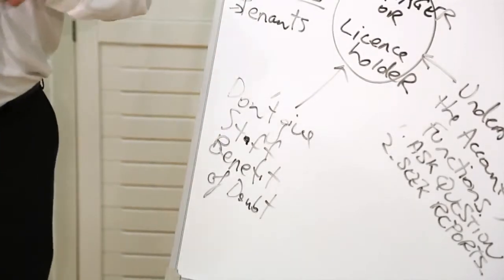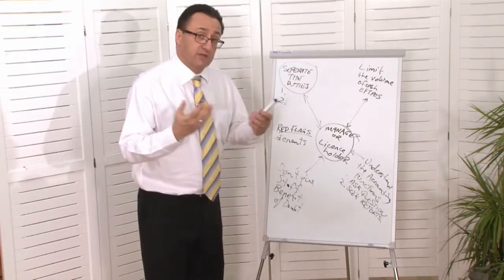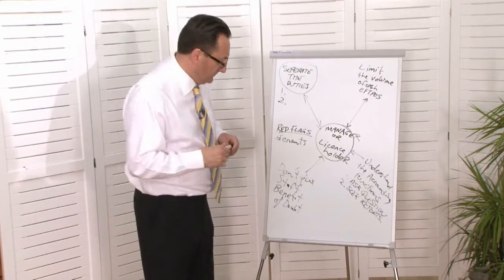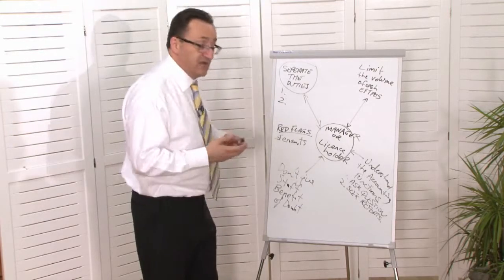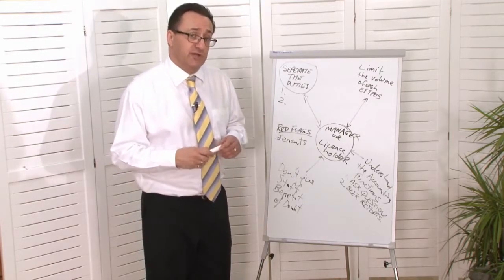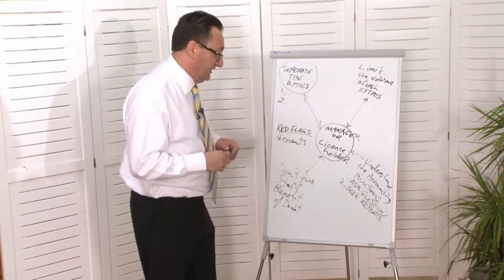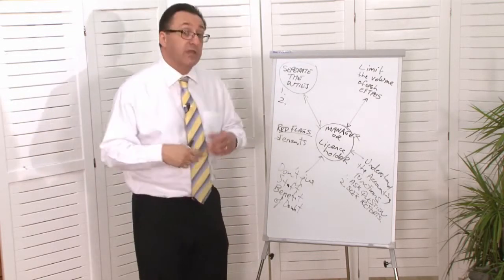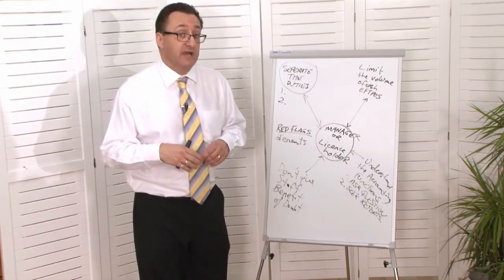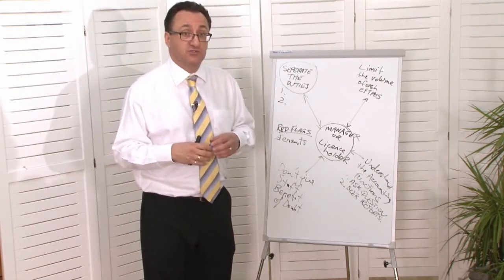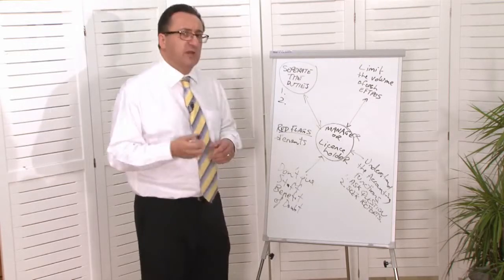You might have a staff member who's involved in controlling funds, cash. And for example, they're too busy to take annual leave, or they might have times where they're working back late and it becomes a consistent trait. You need to find out what's going on.